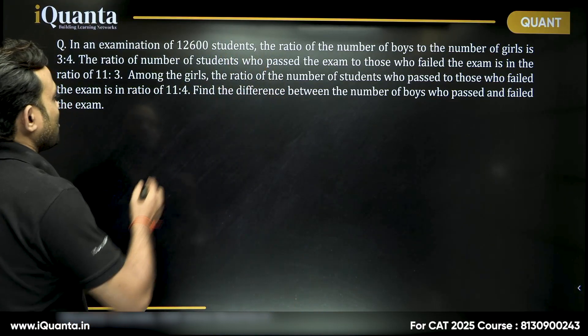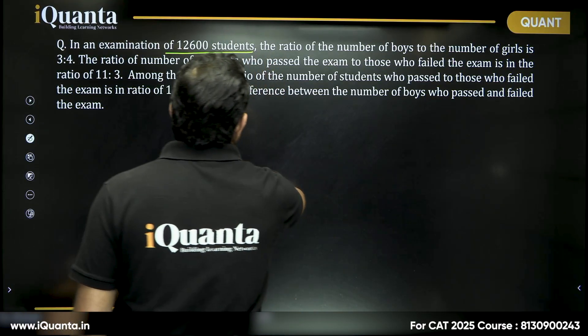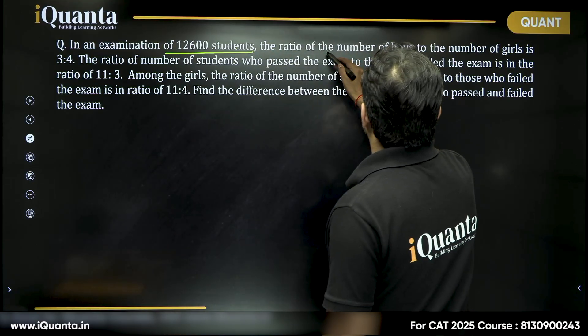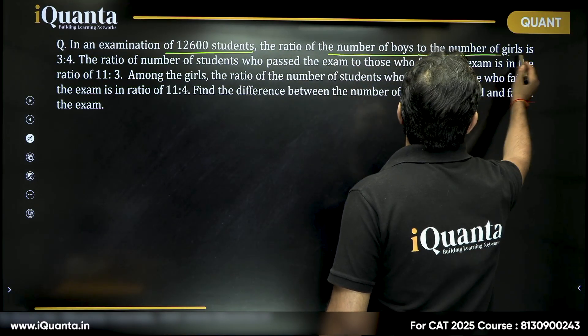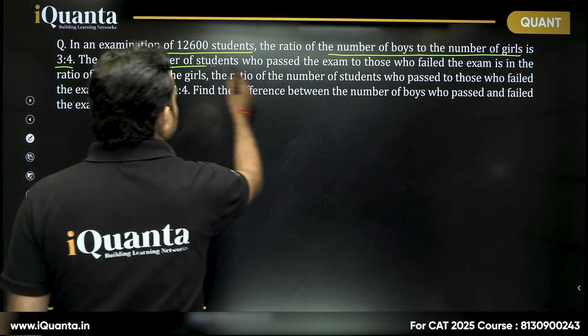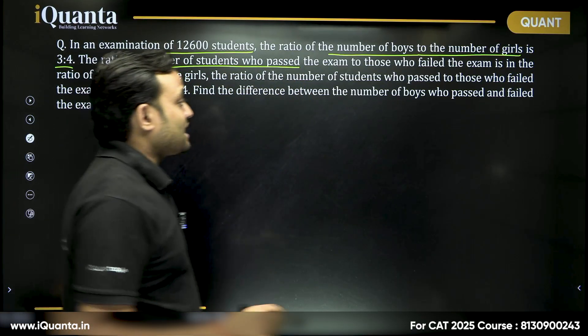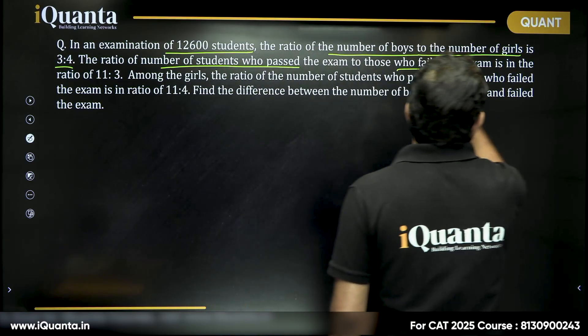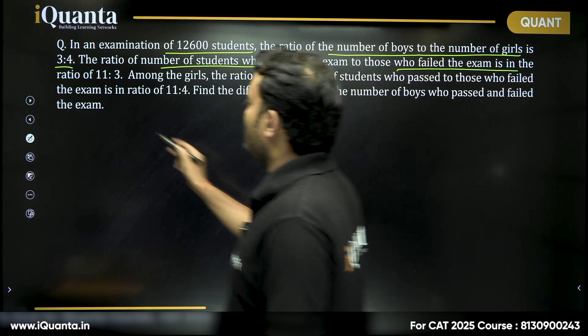It says in an examination of 12,600 students, the ratio of total number of boys to total number of girls is 3 is to 4. The ratio of number of students who passed the exam to those who failed the exam is in the ratio of 11 is to 3.